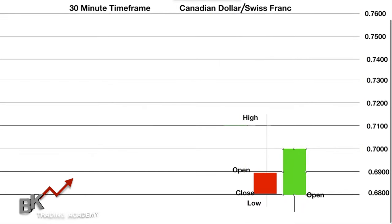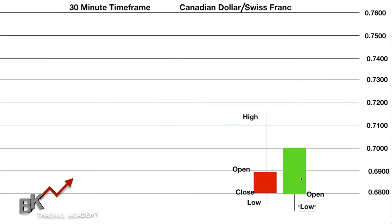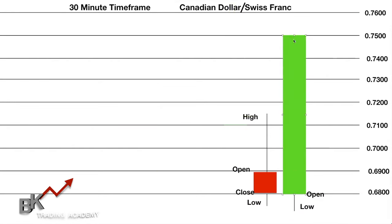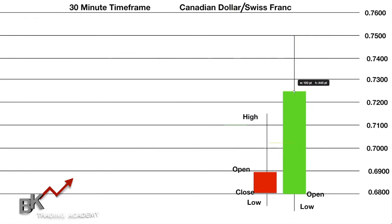The new candle starts and we mark 'Open.' As it pulls back up, a wick is exposed at the bottom, marked 'Low.' If price goes higher than when it opened, the candle turns green. Looking at the right side of the graph, if you guessed current price is at 0.7500, you're absolutely right. A wick forms at the top — that's our 'High' for this 30-minute period — and then price closes when the time frame ends.